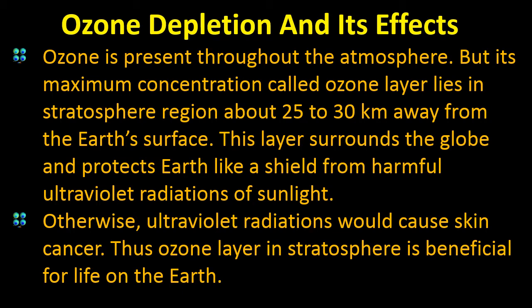Ozone is present throughout the atmosphere, but its maximum concentration — called the ozone layer — lies in the stratosphere region, about 25 to 30 km away from the Earth's surface. This layer surrounds the globe and protects Earth like a shield from the harmful ultraviolet radiations of sunlight, which are so powerful they can cause skin cancer.